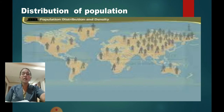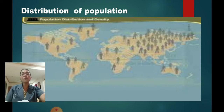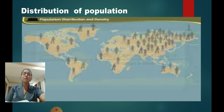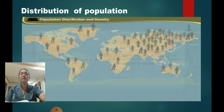Let's see what are the factors which affect the distribution of population — how the people are being distributed, how the population is distributed. People like to live where more facilities are provided to the citizens.